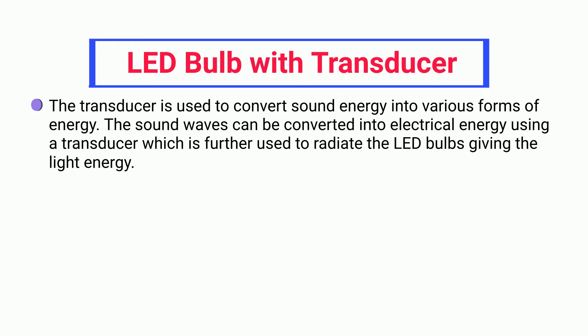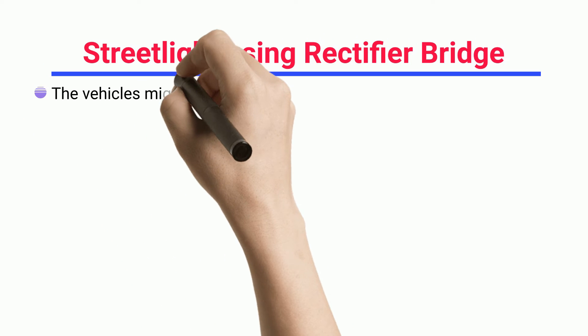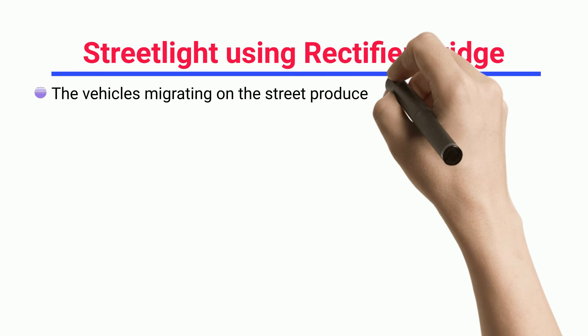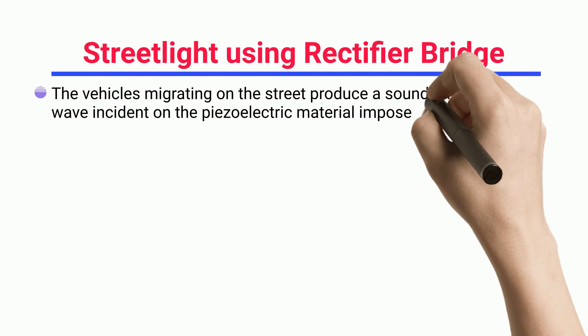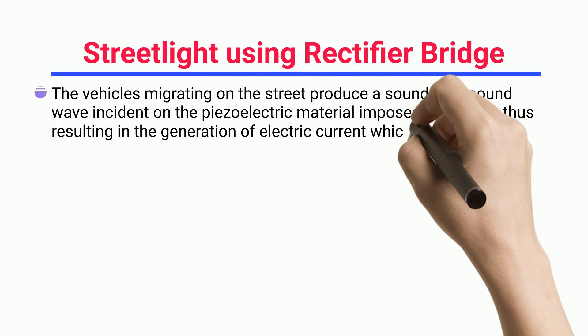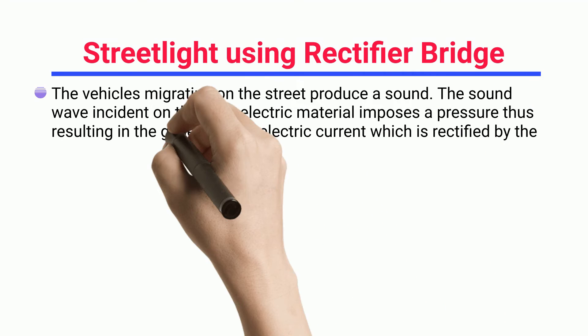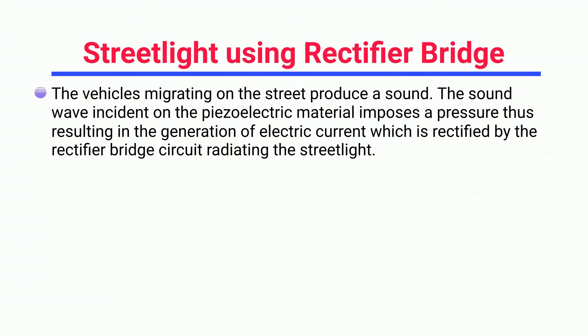Street light using rectifier bridge: Vehicles moving on the street produce sound. The sound waves incident on piezoelectric material impose a pressure, resulting in the generation of electric current, which is rectified by the rectifier bridge circuit to radiate the street light.